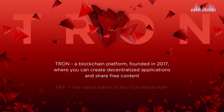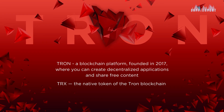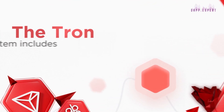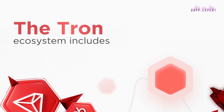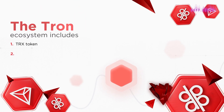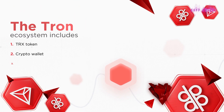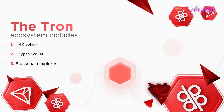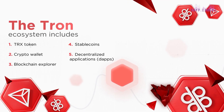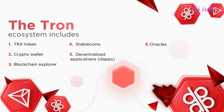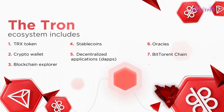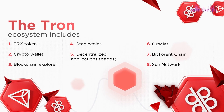TRX is the native token on the Tron blockchain. The Tron blockchain ecosystem includes: TRX Token, Crypto Wallet, Blockchain Explorer, Stablecoins, Decentralized Applications, Oracles, BitTorrent Chain, and Sun Networks.